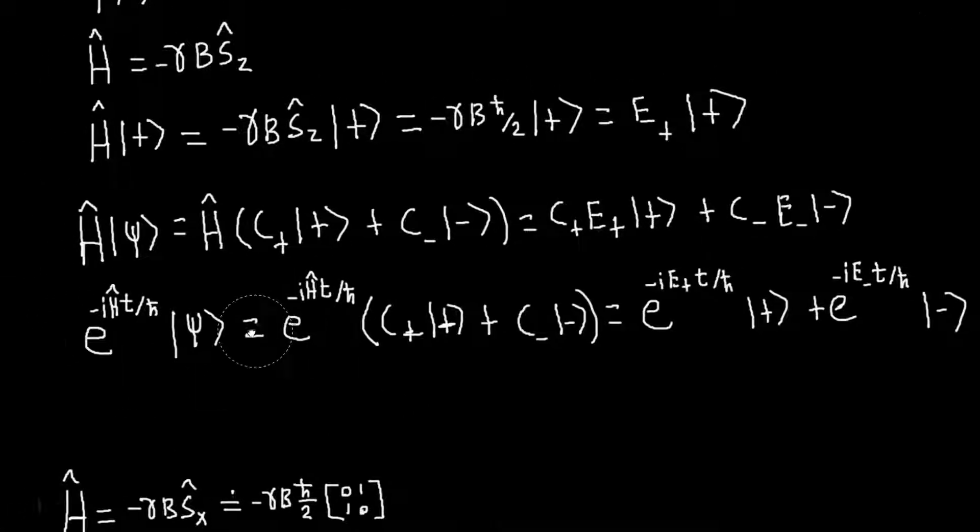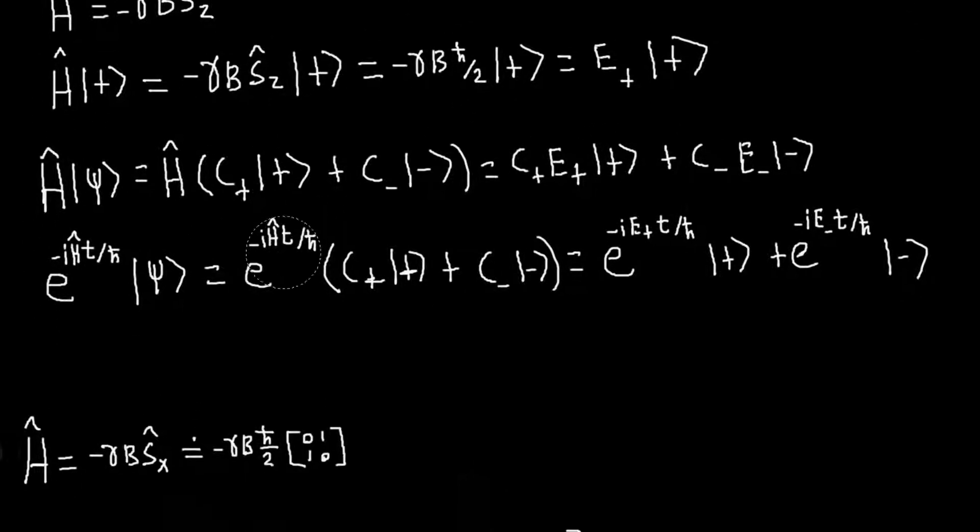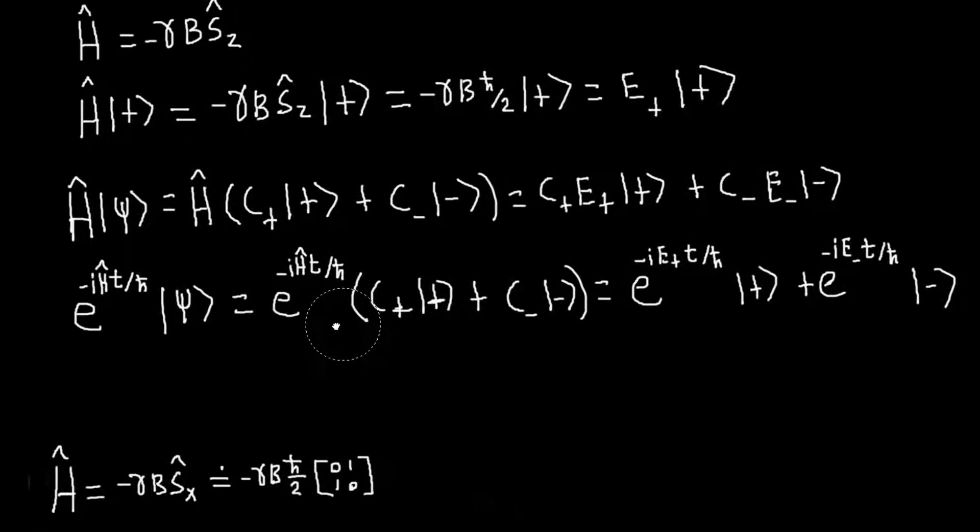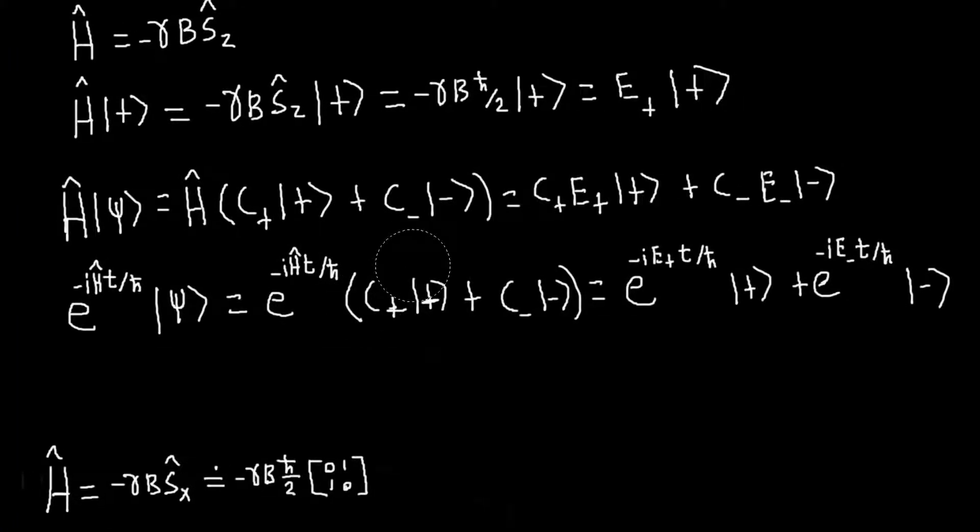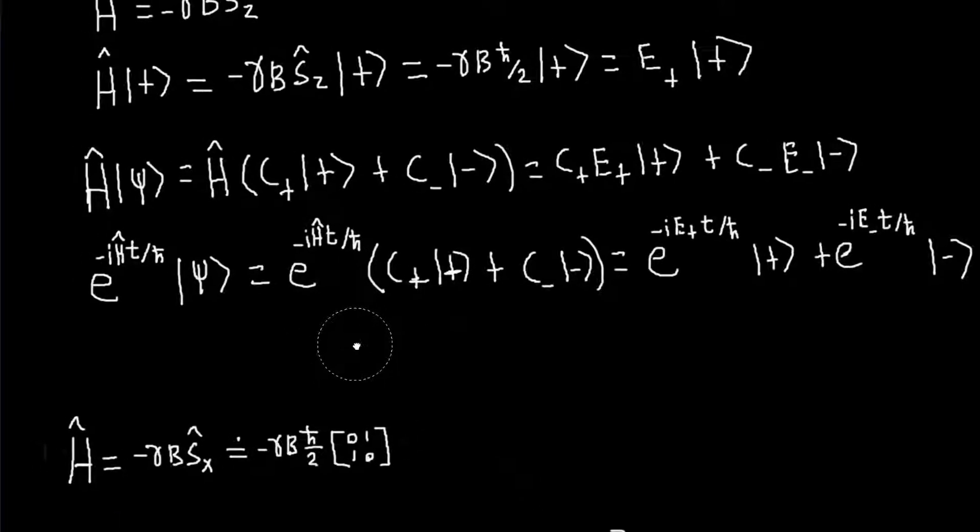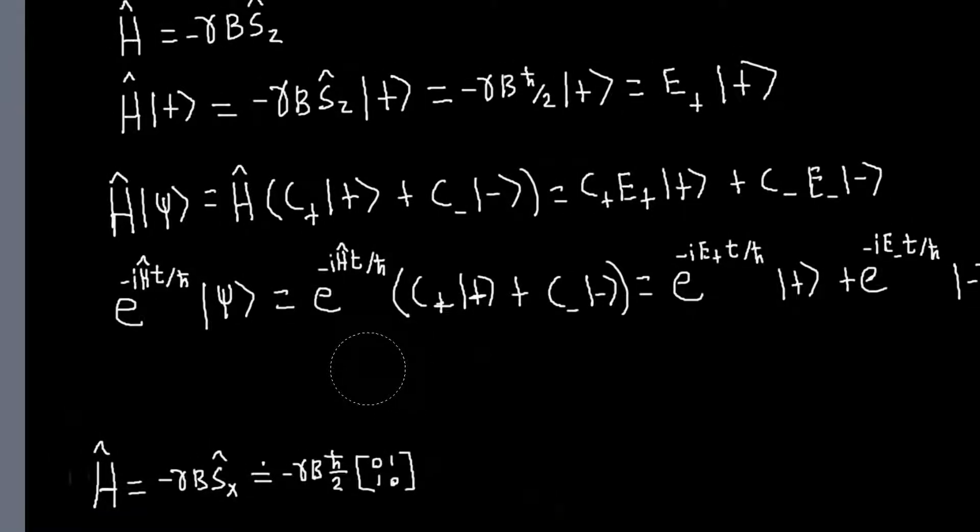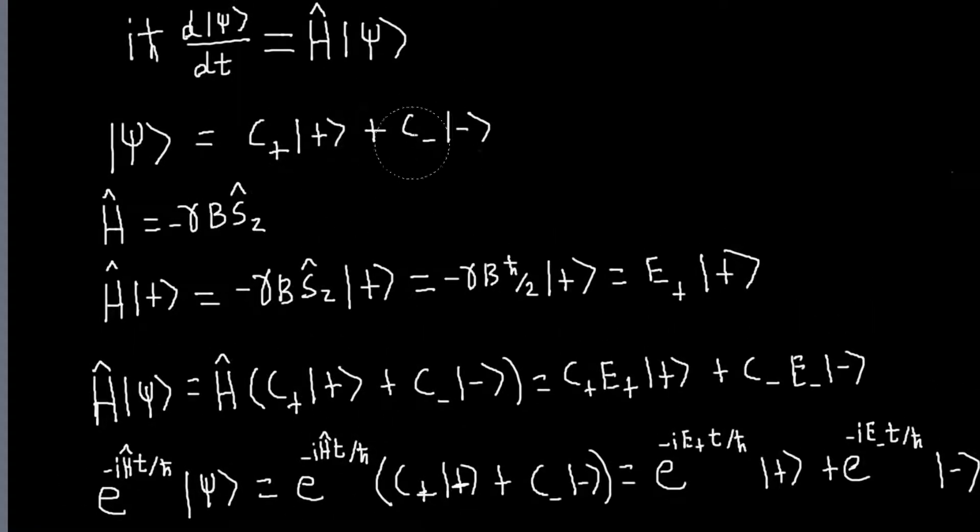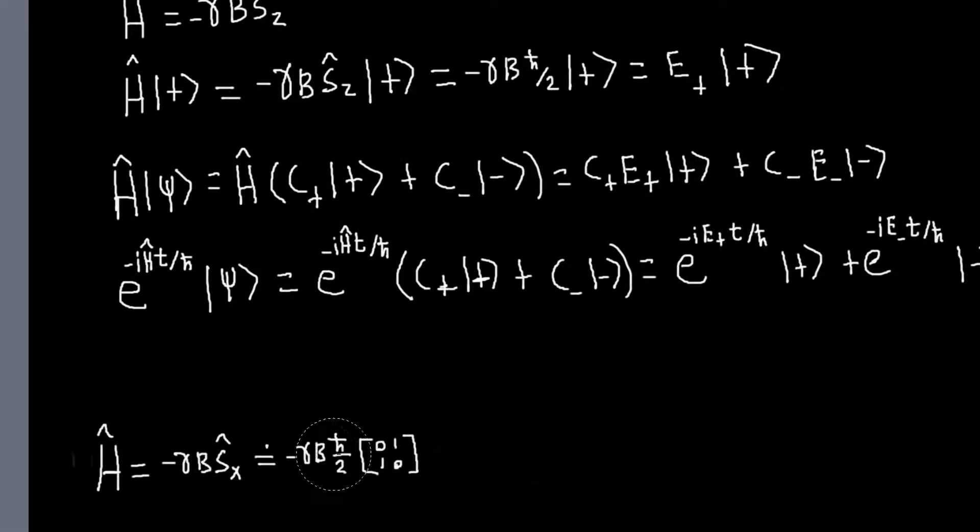So then we can apply our time evolution operator or solve the Schrodinger equation, whatever we want to do. But in that case, we knew ahead of time - we had our state expanded in the basis that wasn't the eigenbasis of the Hamiltonian, but we did know what the eigenstates of the Hamiltonian were in terms of our basis vectors, so we could just convert. So let's pretend we didn't know what combination, what linear combination of our state vectors, our basis, our sx vectors, were eigenstates of this Hamiltonian.